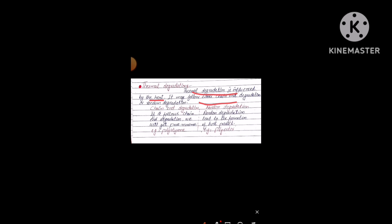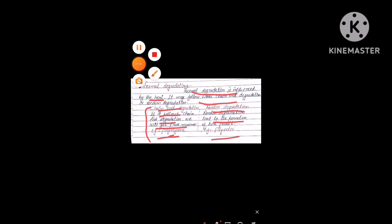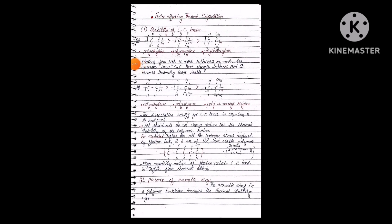If degradation follows chain-end degradation, we get pure monomer — an important MCQ point: how do we get pure monomer in the degradation process? An example is polystyrene. Random degradation leads to the formation of a host of products; an example is polyester. This is also important for MCQs.